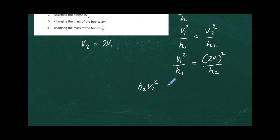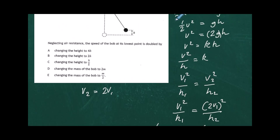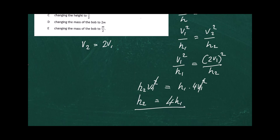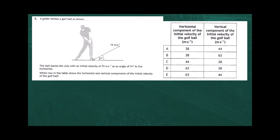Cross-multiplying gives h2 times v1 squared equals h1 times (2v1) squared, which is 4v1 squared. The v1 squared cancels from each side, leaving h2 equals 4h1. So to double the speed at the bottom of the pendulum, the release height must be four times the original height. The answer is A.